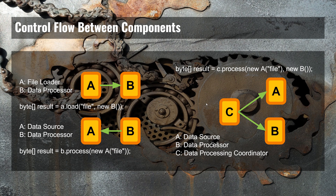Third, we could decide to add a third component C, and then the interaction would look like this. We would have an instance of C, call its process method, and C would be a data processing coordinator. What C will do is take an instance of A — a data source — and an instance of B — a data processor. C will first call the data source, which loads the file, and then call the data processor, which processes the file. The result of the processing will then be returned from C to whoever calls C.